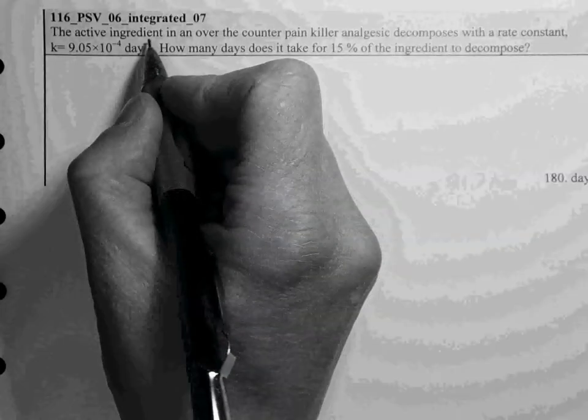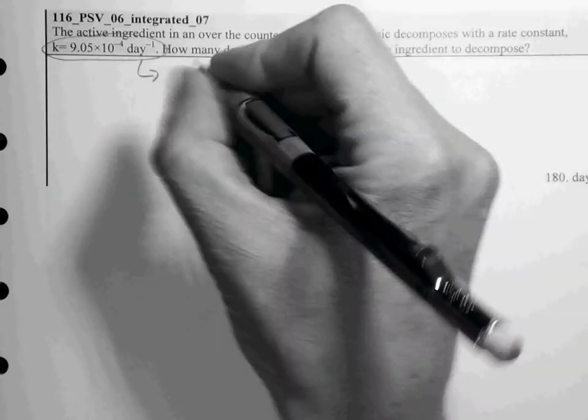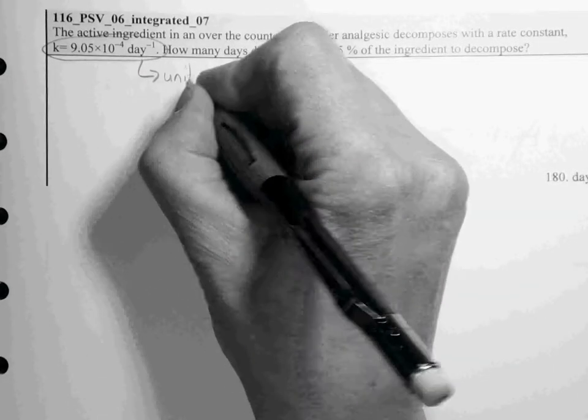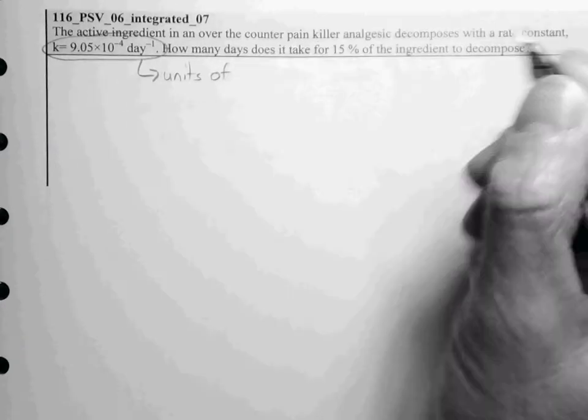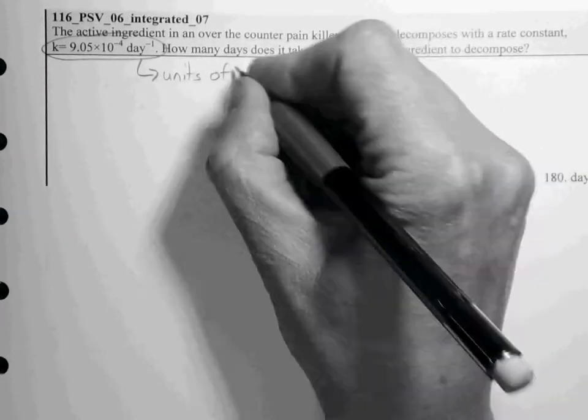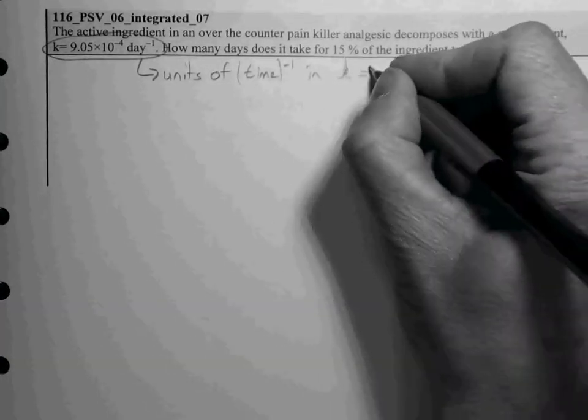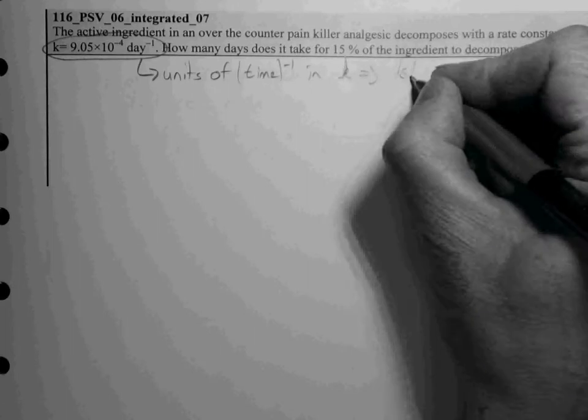We're given a rate constant, K, here from the units. The units of reciprocal time in K tell us that this is a first order reaction.